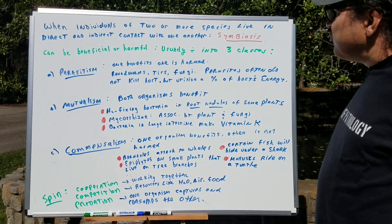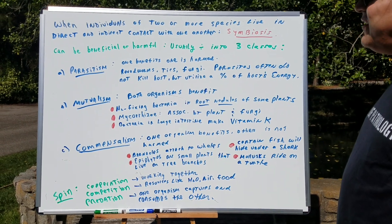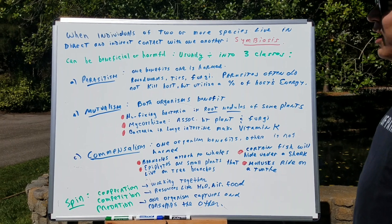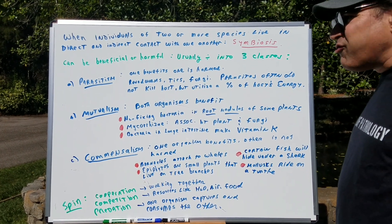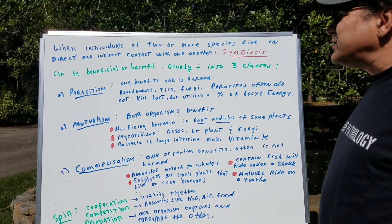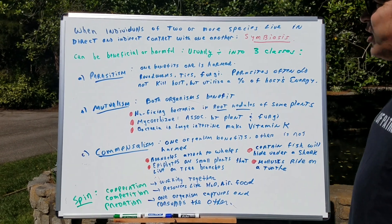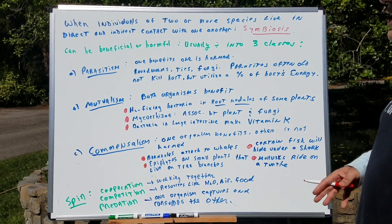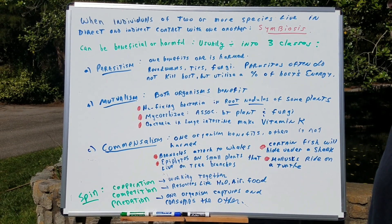When individuals of two or more species live in direct and indirect contact with one another, we call this a symbiosis. I very rarely like to even use the word symbiosis, because it doesn't mean too much. It just means that it's a relationship between species, but it could be beneficial or it could be harmful, so I'd rather specify.